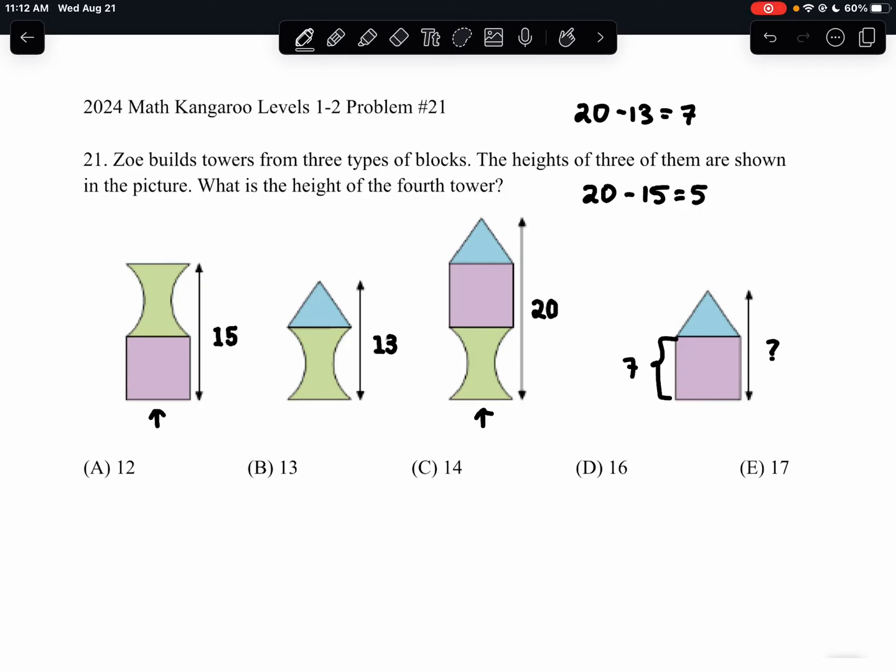So because the first and the third structures are the same except for the blue triangle, and the difference in their heights is equal to 5 units, we know that the blue triangle must have a height of 5 units.